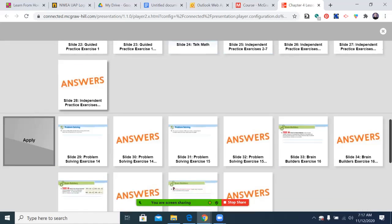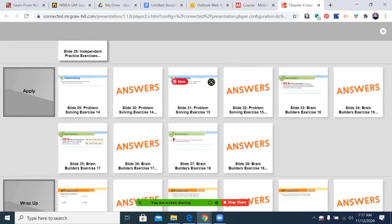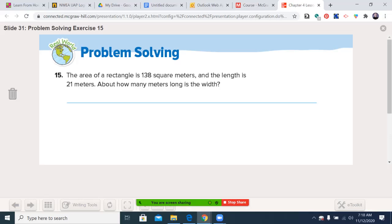All right, let's pick a random story problem. The area of a rectangle is 138 square meters and the length is 21. About how many meters long is the width? Remember here are the numbers, your dividend and your divisor. Go ahead and solve the problem. You may pause the video now. Welcome back. Let's see how you did. You had about 140 divided by about 20 came to about seven meters.